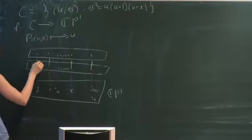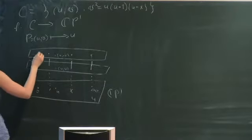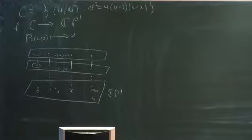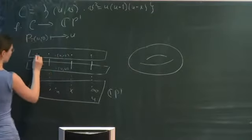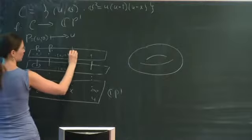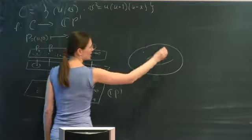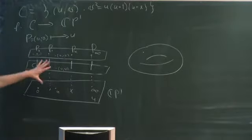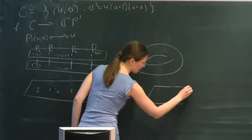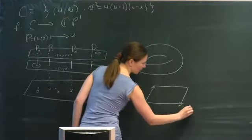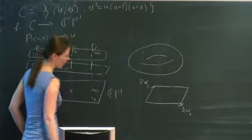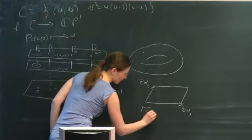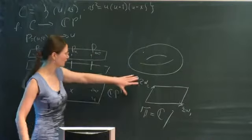If you go around a ramification point, you end up on a different sheet; go around once again and you come back to the first sheet. Topologically, this is a torus. The ramification points I will denote p0, p1, px, and p-infinity. Since it's a torus, we can also think about it as a fundamental parallelogram spanned by two vectors 2ω₁ and 2ω₂.